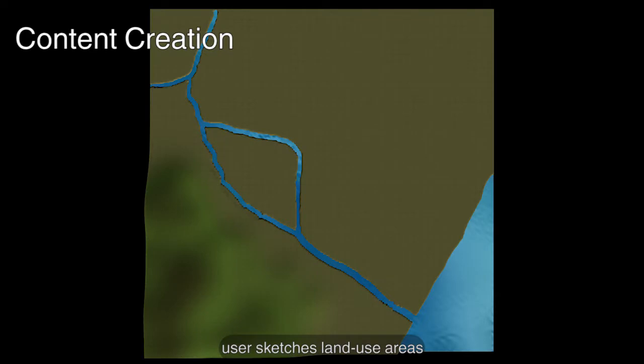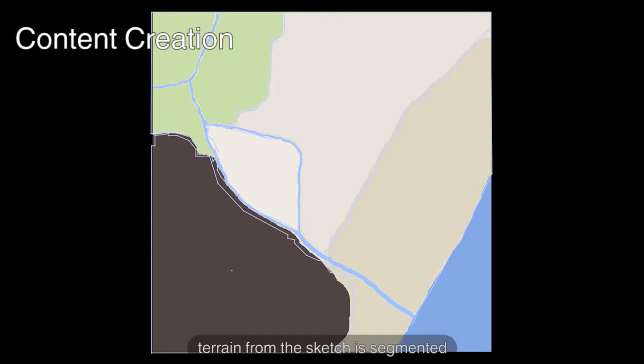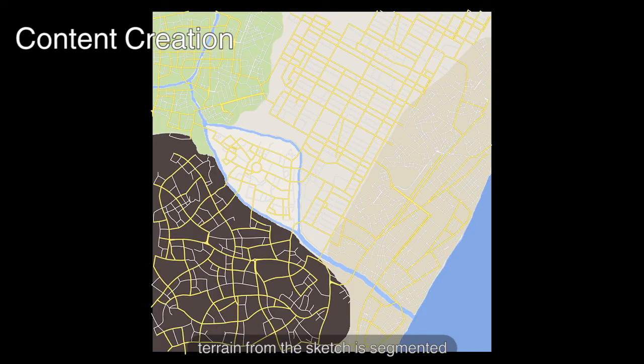In this content creation example, the user draws a sketch of an urban area. Our system automatically uses the sketch to generate a terrain segmented into corresponding land use areas. Our system automatically finds a source example for each target area based on its average elevation.